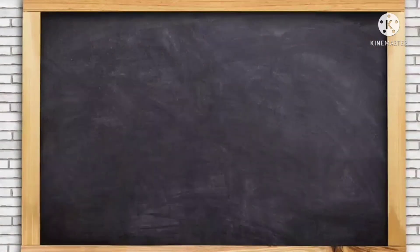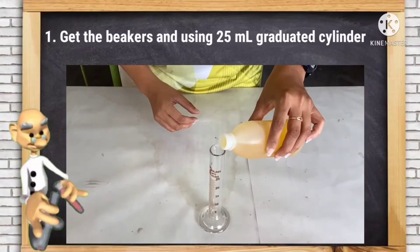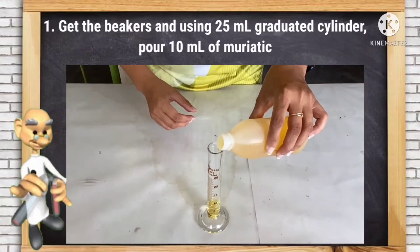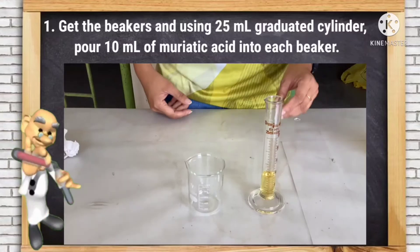Here are the procedures. Number one, get the beakers and using 25 ml graduated cylinder, pour 10 ml of muriatic acid into each beaker.